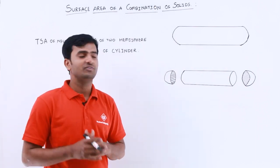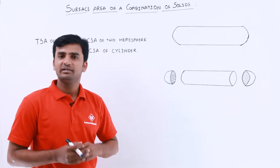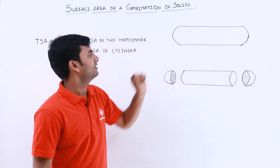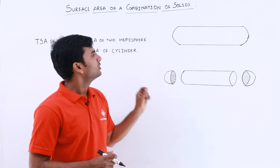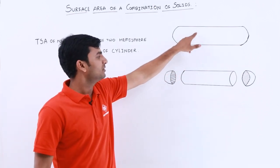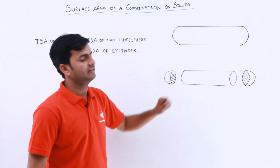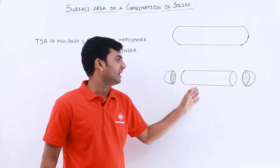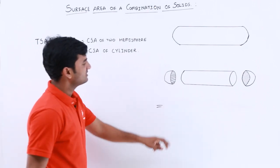Here we have a solid and we want to find out its surface area. We don't have any particular formula to find the direct surface area of this solid, but if you observe it carefully, it looks like a combination of two basic shapes. If you divide this shape into different parts, you get two hemispheres and one cylinder. Now we know the surface area formulas for a hemisphere and a cylinder.